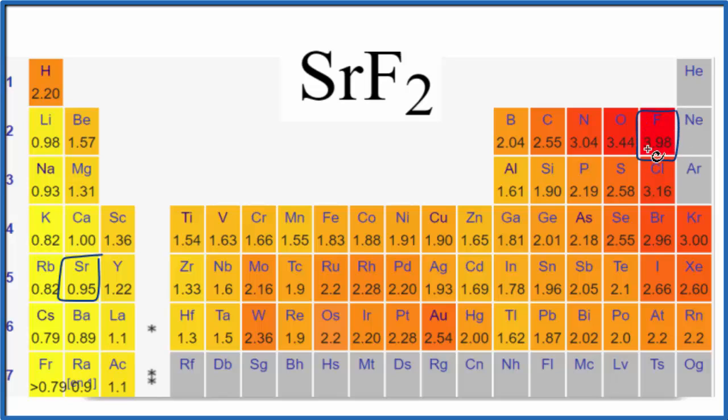So when the difference is greater than 2.0, we have an ionic compound. For strontium fluoride, 3.98 minus 0.95, that's a lot greater than 2. So this is an ionic compound.